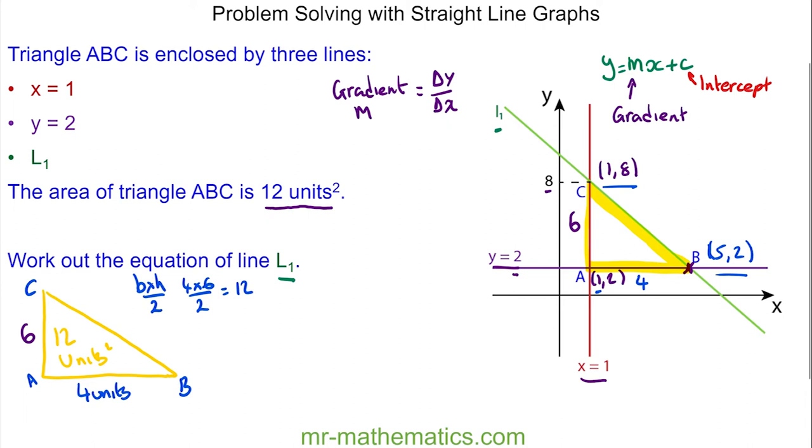The change in y is the difference between here to here, which is negative 6. And the change in x is between B to A, which is 4. We can simplify this fraction to make negative 3 over 2.